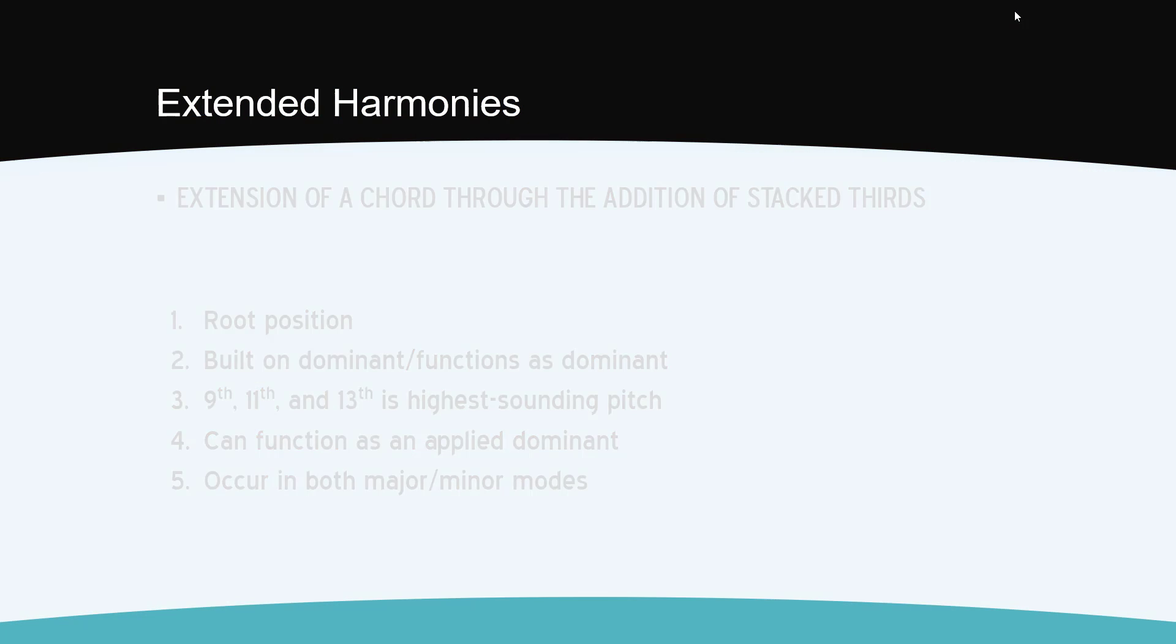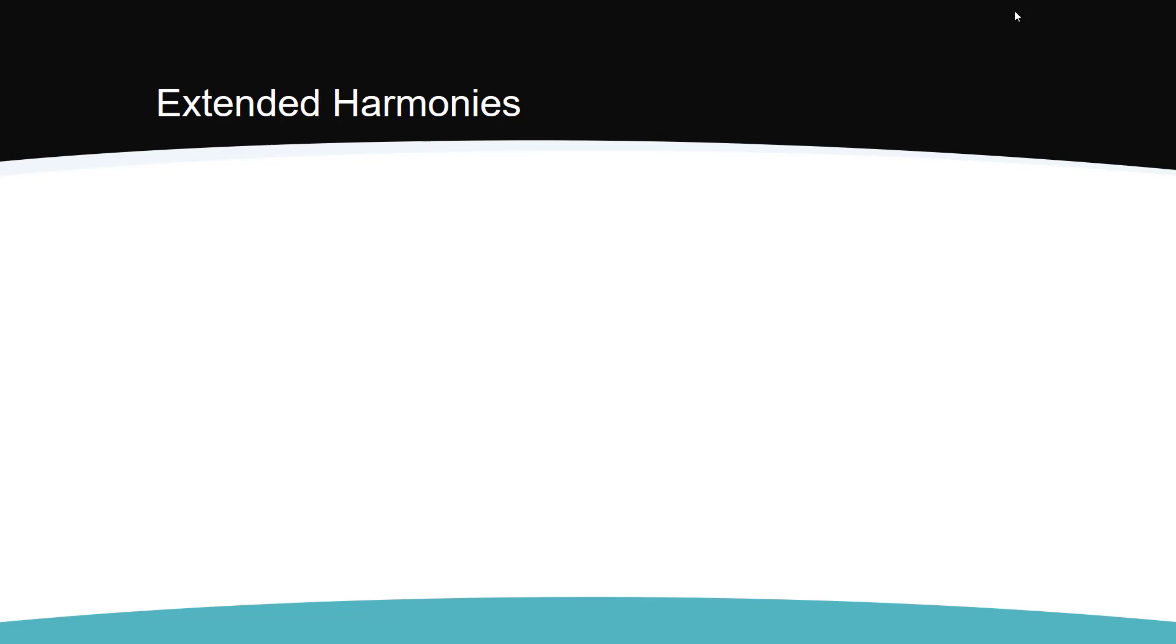Let's look at how these harmonies are built. To keep things simple, we will look at the keys of C major and C minor. Here is the dominant triad harmony in C major. Its quality is major. When we add a third on top, we create the dominant 7th harmony. Its quality is major-minor. We can add another third on top of that. Now we have a major-minor 7th chord with an added major 9th above the root. We would analyze this chord as an uppercase or major 5 with a superscript 9.